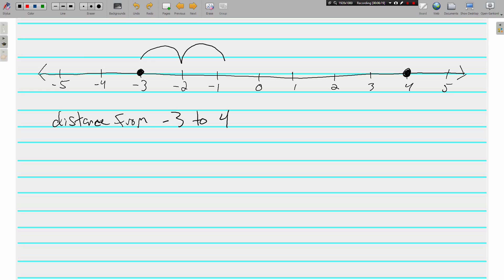One, two, three, four, five, six, seven. So, the absolute value of negative 3 minus 4 is 7.